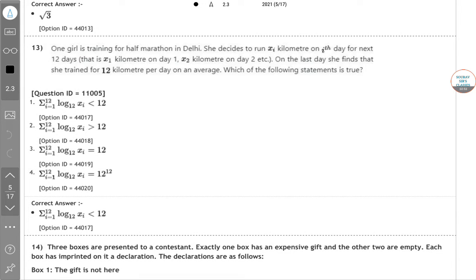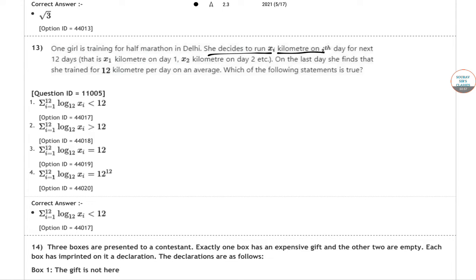One girl is training for half marathon in Delhi. She decides to run X_i kilometers on day i for the next 12 days. And on the last day she finds that she traveled 12 kilometers per day on average. What is the statement? So X1 plus X2 dot dot dot X12 by 12 is equal to 12. So summation of X_i is 144.